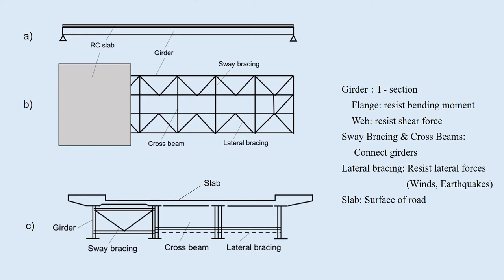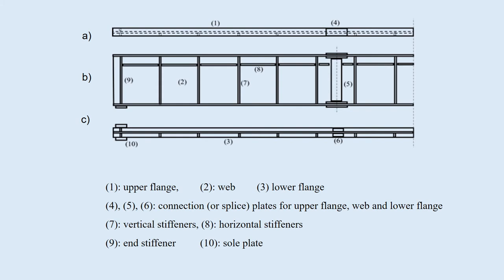The slab is the surface of road and connected to the upper flange. A is the upper view, B is the side view, and C is the lower view. The main girders have an I-section by welding upper flange 1, web 2, and lower flange 3 together. The girder is usually separated into some blocks because of the transportation limit. The blocks are fabricated at a factory and transported to the construction site, and jointed together by high tensile bolts at joint 4. Joint 4 is for the upper flange, 5 for the web, and 6 for the lower flange.